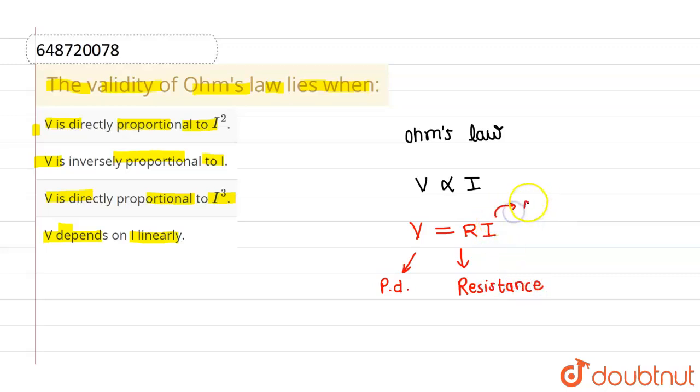And I is the current which is flowing through the conductor. So this is Ohm's law. Now you can clearly see that V is depending on current linearly, so the correct option is option 4 and rest all options are incorrect. I hope you understood, thank you.